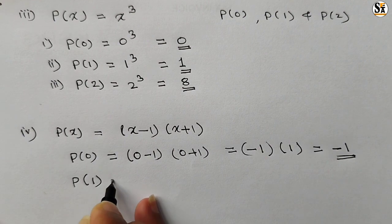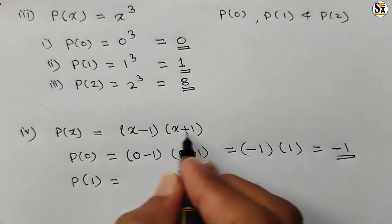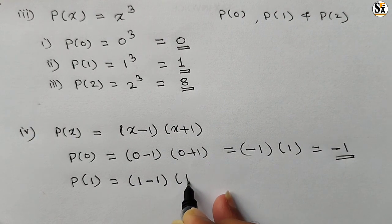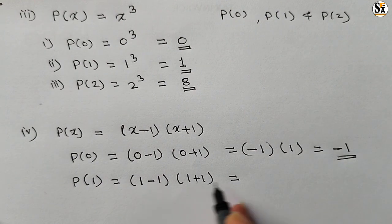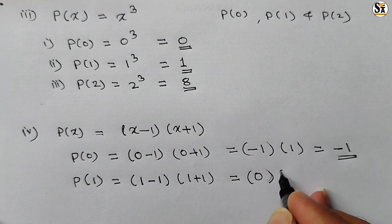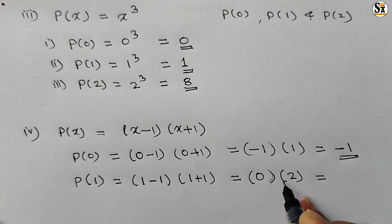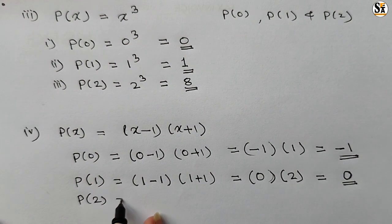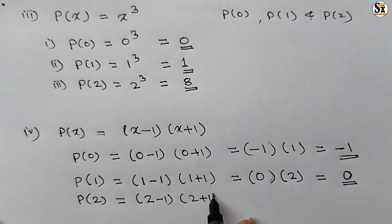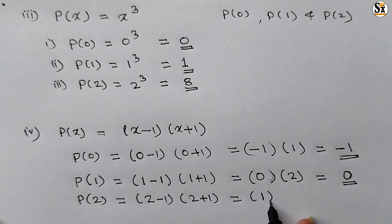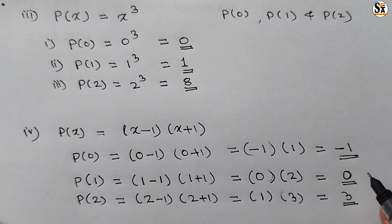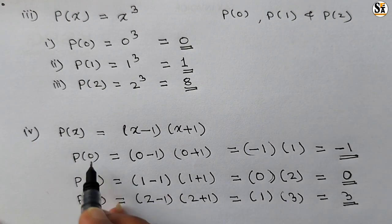For p(1): put x equal to 1, so (1 minus 1)(1 plus 1) equals (0)(2). Multiplying any number with 0 gives 0, so our second answer is 0. For p(2): put x equal to 2, so (2 minus 1)(2 plus 1) equals (1)(3) equals 3. Thus these are the three values of this polynomial when we put variable value as 0, 1, and 2.